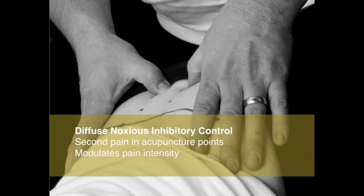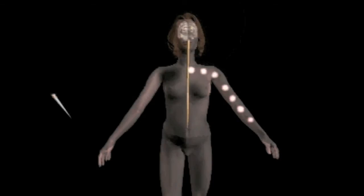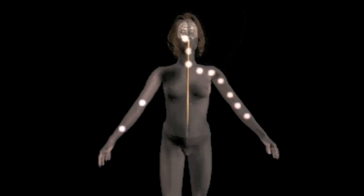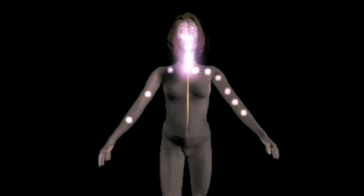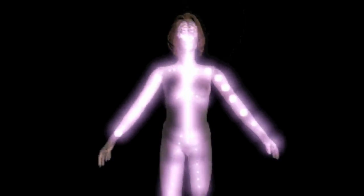The third mechanism is the Diffuse Noxious Inhibitory Control, also known as the DNIC system. The DNIC system consists of creating a second pain anywhere in the body, which mostly modulates pain intensity. When you create the second pain, the signal goes to the brain. The brain wants to attract attention and understand the nature of the second pain, and releases endorphins all over the body.